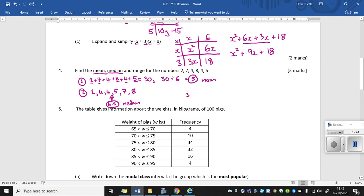The last thing we need to work out, the third thing we need to work out, is our range. Now to find our range, that is the highest, take away the lowest. So our highest number is 8 in the list. Our lowest number is 2. So our range is going to be an answer of 6. Okay, question 5.